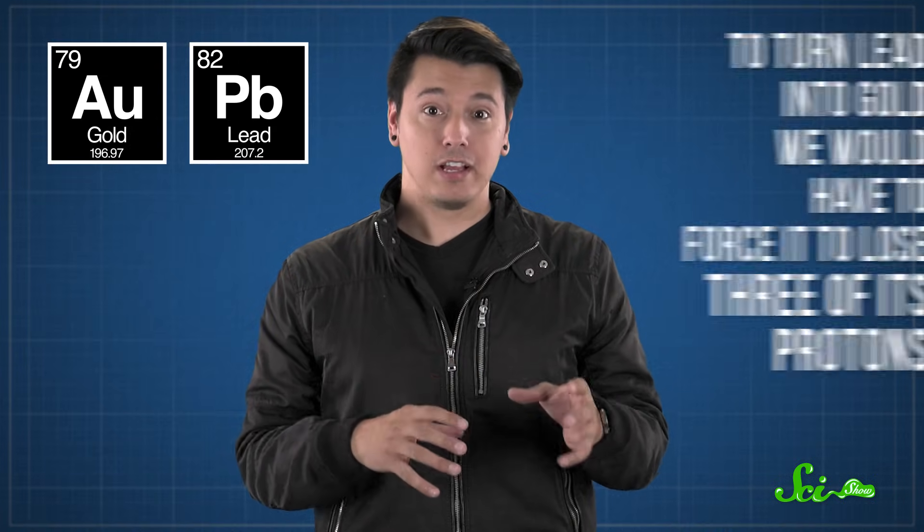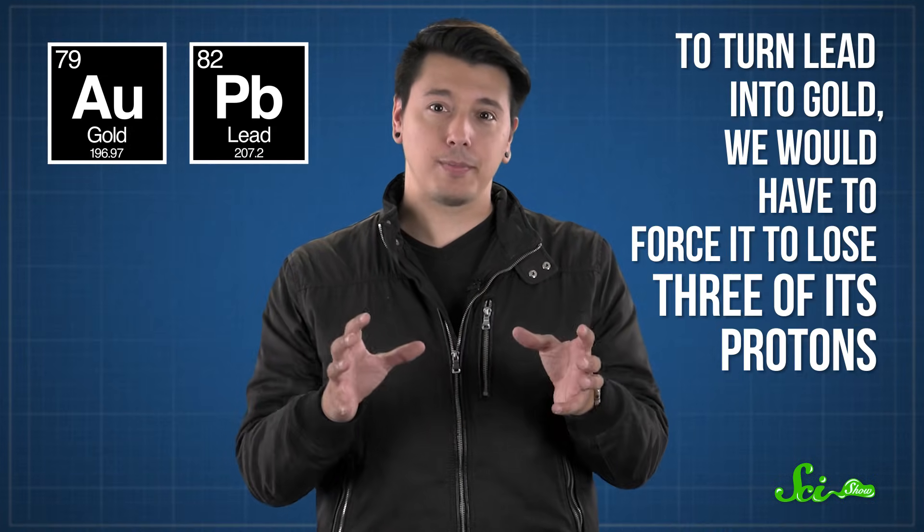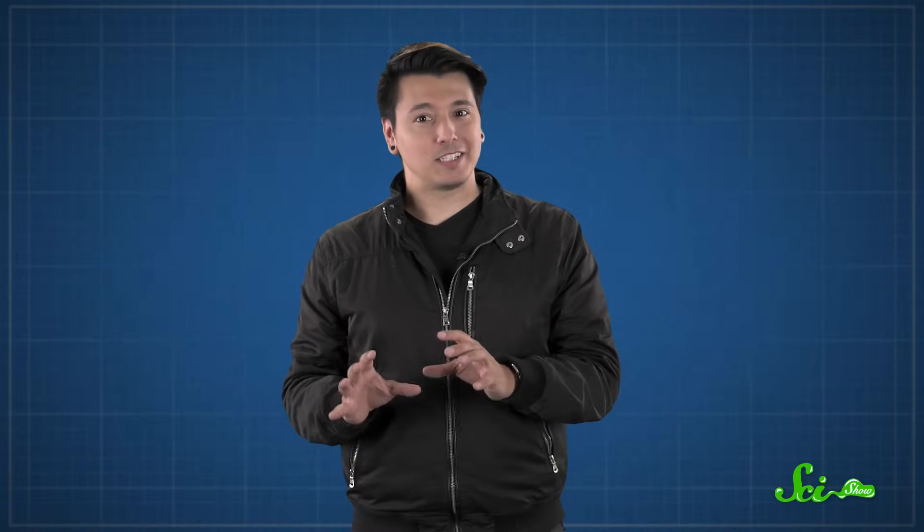Elements are defined by the number of protons their atoms have in their nuclei. Lead has 82 protons, and gold has 79. So to turn lead into gold, we would have to somehow force it to lose three of its protons. But it's not that simple.